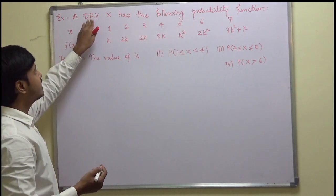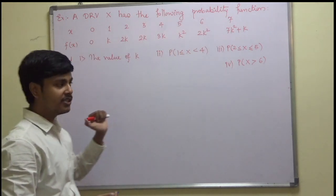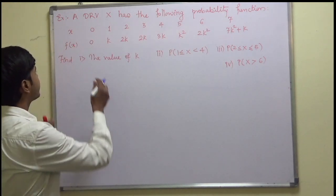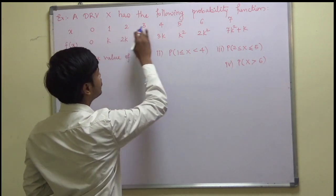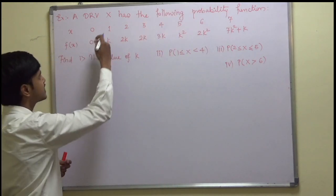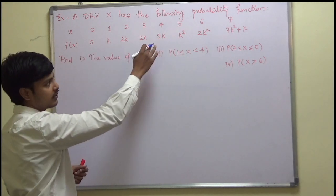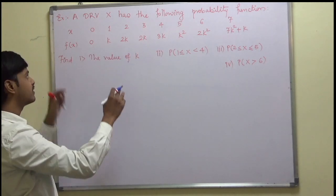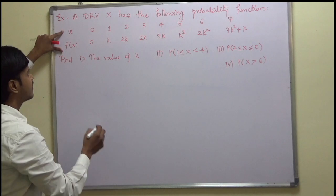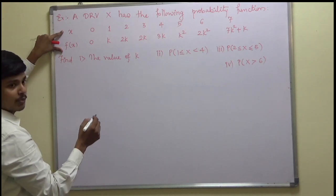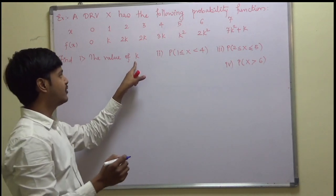A discrete random variable x has the following probability function. The random variable takes values 0 to 7 and the corresponding probabilities are given to you. Together they represent the probability function. We have to find out the value of k.